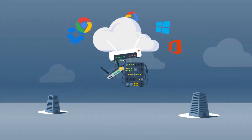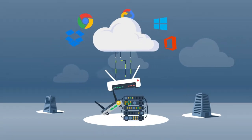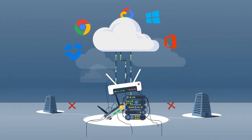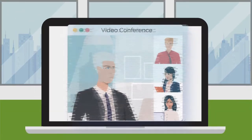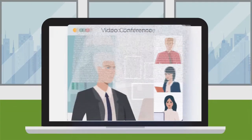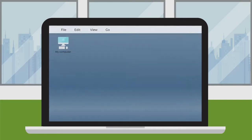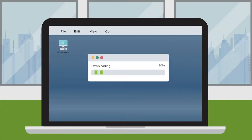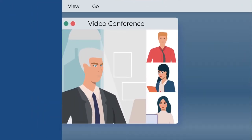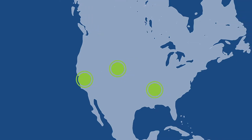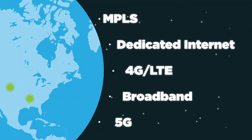Moving apps to the cloud is smart, but doing it with the traditional network architecture and complex jumble of hardware devices can ruin the benefits you're trying to achieve. Cloud apps travel long distances, which means you need fast and flexible solutions that keep your data transfer speedy and video conferences smooth and stutter-free. Users need to access applications from anywhere and across any type of WAN.